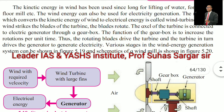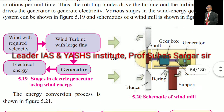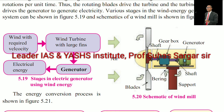Kinetic energy in wind has been used since long for lifting of water and for driving flour mills. Wind energy can also be used for electricity generation. The machine which converts the kinetic energy of wind to electrical energy is called a wind turbine. As the wind strikes the blades of the turbine, the blades rotate. The axle of the turbine is connected to an electric energy generator through a gearbox. The function of the gearbox is to increase the rotation per unit time. Thus, the rotating blades drive the turbine and the turbine in turn drives the generator to generate electricity.